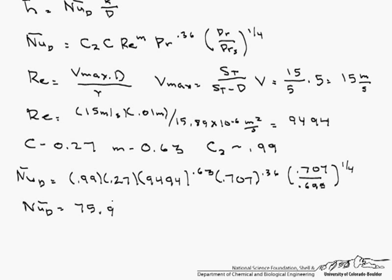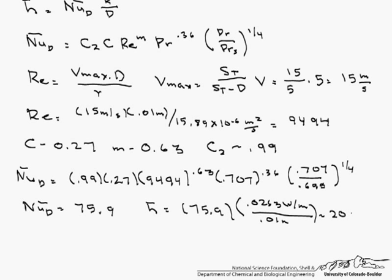From the Nusselt number, we can get our h-bar, which is 75.9 times 0.0263 W/m·K — that's the thermal conductivity of the fluid — divided by the diameter 0.01 meters. So our h-bar is 200 W/m²·K.